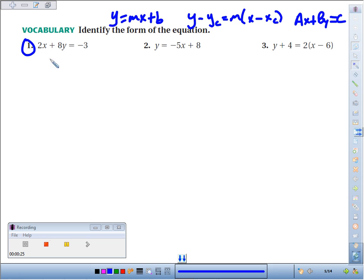If we look at number one, 2x plus 8y equals negative 3, we've got the x and y on the same side. We've got the constant terms here. Number one would be standard form.